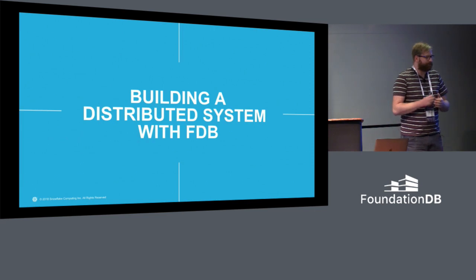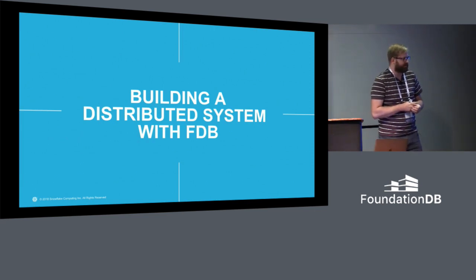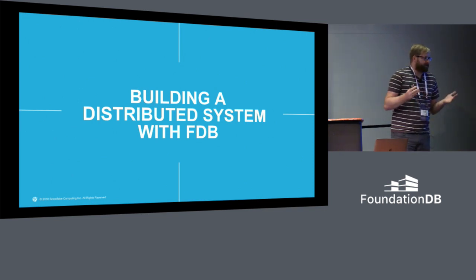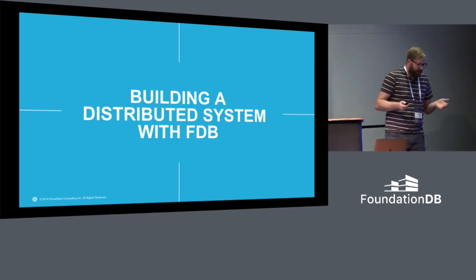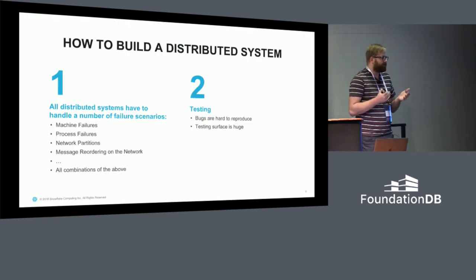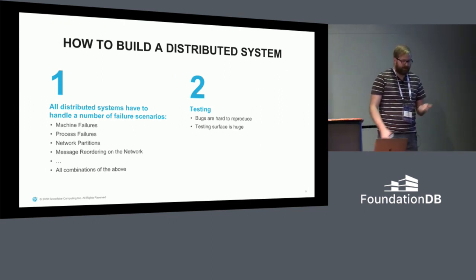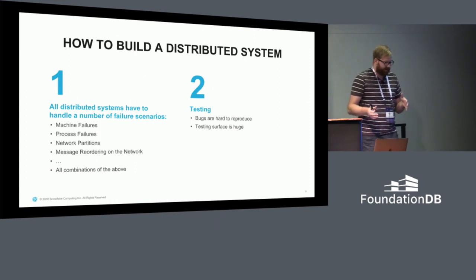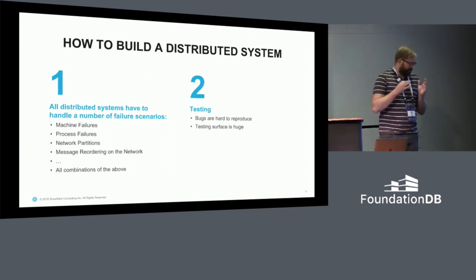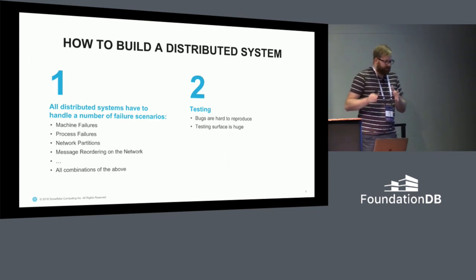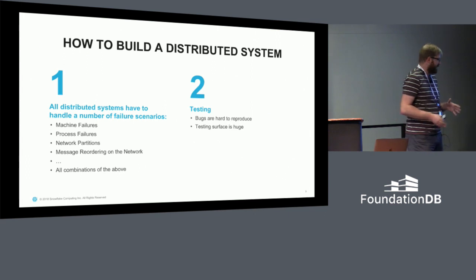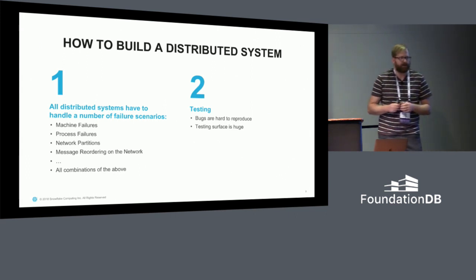Now this detour. When we started this project, the very first part of the code was the idea to build a new distributed system. If you build a distributed system, you have to think about failure scenarios and how to fix those during runtime: machines failing, processes failing, disks failing, network partitions — and you cannot differentiate between network partitions and machine failures. You can have message reordering on the wire. To make your life even more miserable, these things will happen at the same time. Because of that, you need a good testing story. And if I had to say what is the best thing about FoundationDB, I would say it's the testing story.